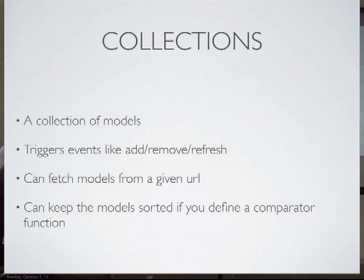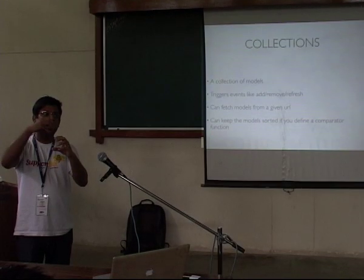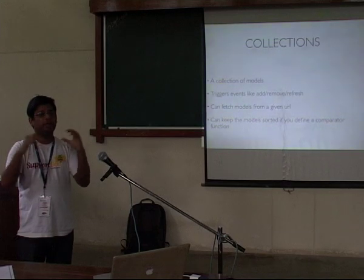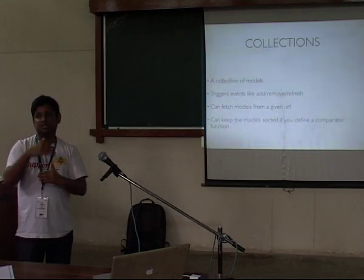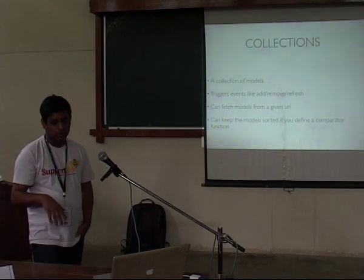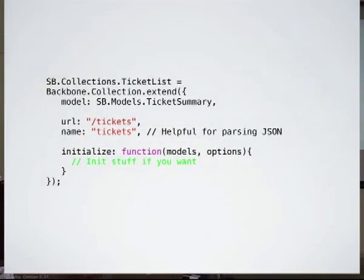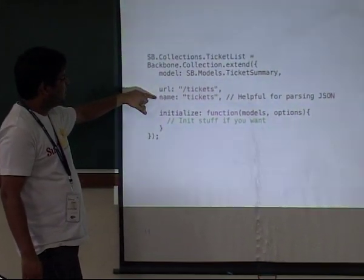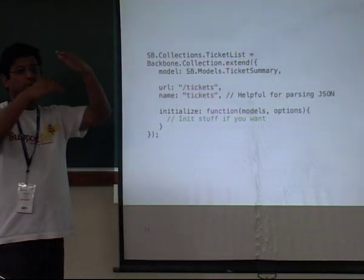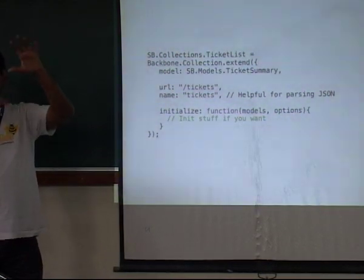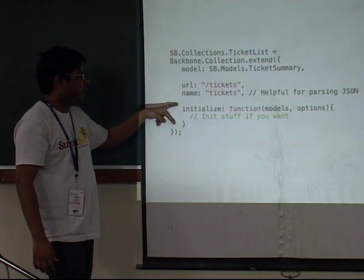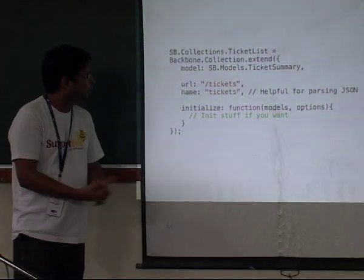You can also define a comparator in your collection. Every time you add a new model, it will invoke the comparator and insert it in the right order, so you can be sure the models stay in a particular order. Here's how collections look — a TicketList collection is a collection of the model we defined. This is the URL to fetch from. You can specify a name for namespace handling of your JSON, and you can do initialization in the constructor.